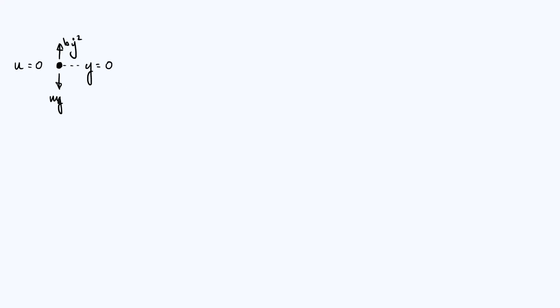What does our diagram show? We've got a particle sitting at a y-coordinate of zero. We are going to have our y-axis pointing upwards, so as soon as this particle starts to fall it's going to have a negative y-coordinate. I've also shown the two forces acting on the particle: mg the weight acting downwards, where m is the mass of the particle, and b·ẏ² is the drag force — ẏ² is the speed squared because the dot represents a time derivative, and b is the coefficient of proportionality. We also note that u equals zero, meaning the initial speed of the particle is zero, so we drop it from rest.